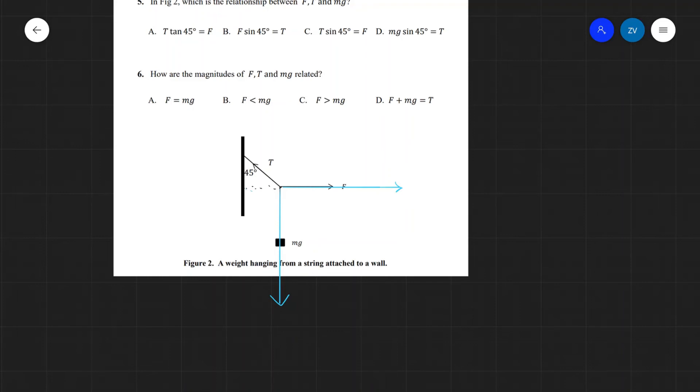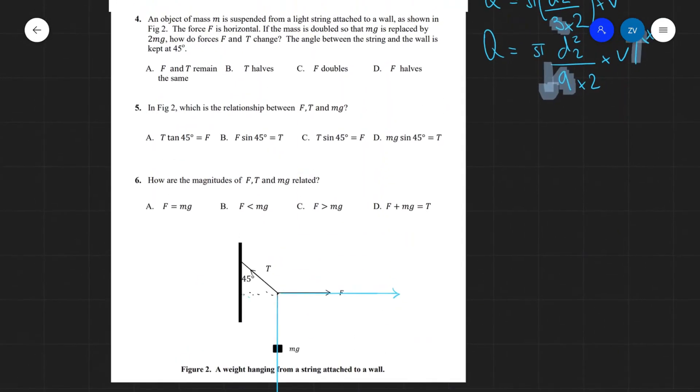You could also do this problem by the process of elimination as well, so let me just demonstrate that. F and T remain the same. Well, that's not going to be the case, because if F and T remain the same, and if mg increases by a factor of 2, then you no longer have an equilibrium. The angle will change. T halves, well, if the lower forces increase and the forces up here lower, then you're definitely not going to have any equilibrium. F doubles, as we said, that's the correct answer. If F halves, once again, you are not going to have an equilibrium, the angle will change.